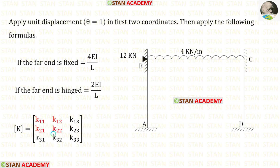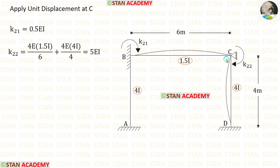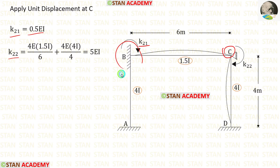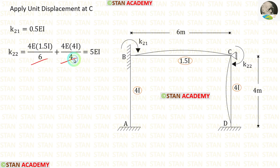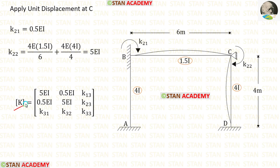Now let us find K22 by applying unit displacement at point C. At point C, the fixed support becomes a hinged support. For K22, looking from point C at other ends: both ends have fixed supports, so we apply 4EI/L. For CB: L = 6 and moment of inertia 1.5I. For CD: L = 4 and moment of inertia 4I. After adding these two values we get K22.